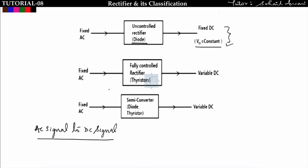In a fully controlled rectifier we use a thyristor. Depending upon the firing angle we can vary the output DC voltage, so it is variable. We give a fixed input of Vm sin(ωt) and get a variable DC output whose magnitude depends on the firing angle of the thyristor.